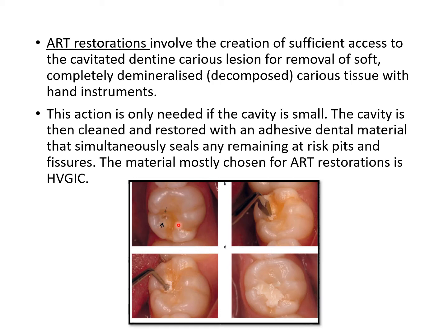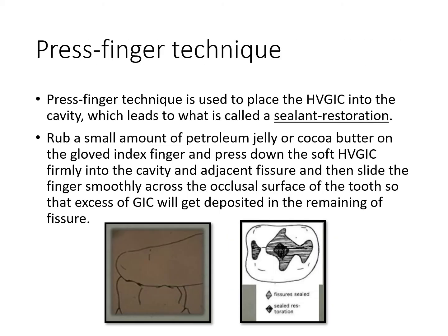For ART restoration: where there is a small caries lesion, specially designed hand instruments are used to open the tooth to make it accessible for the spoon excavator. GIC is then applied using the finger pressure technique to restore the area. Additionally, GIC can be pushed into adjacent pits and fissures to create a combined ART restoration and ART sealant in one procedure.